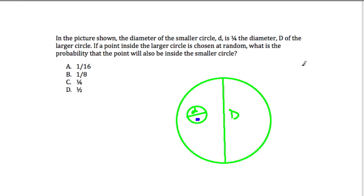The probability of this happening, I would just think of this as the area of little circle over the area of the big circle, right?